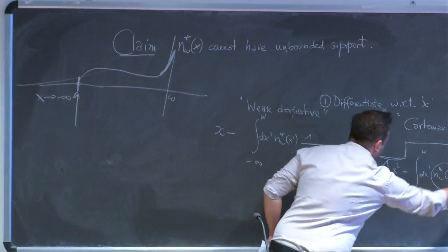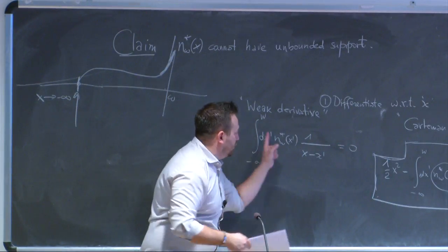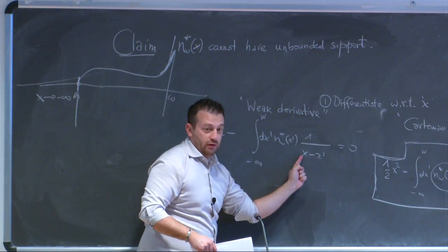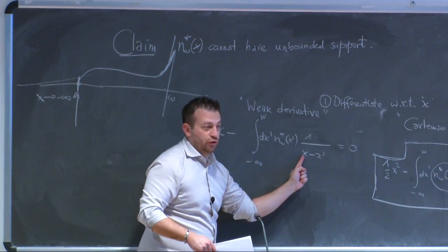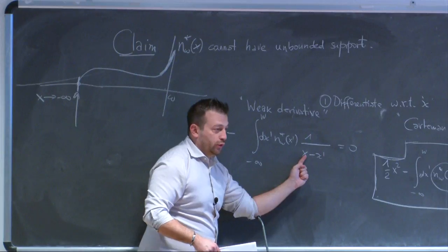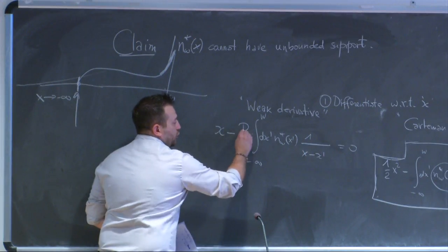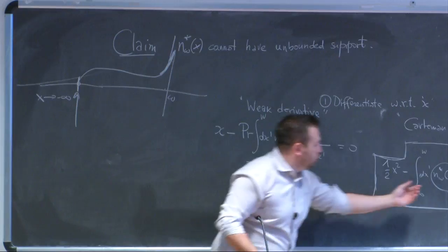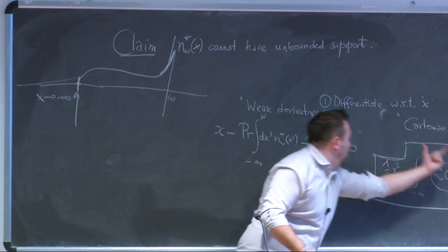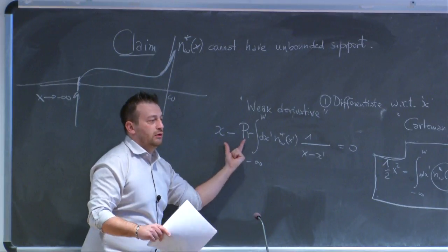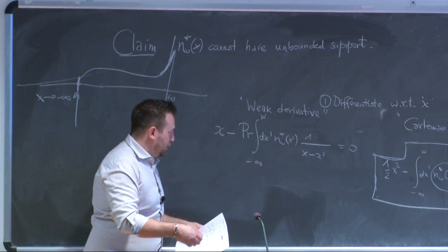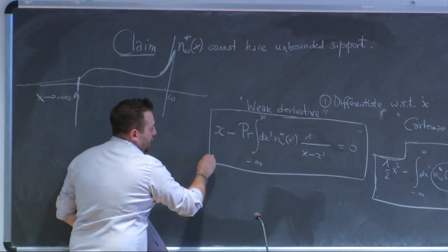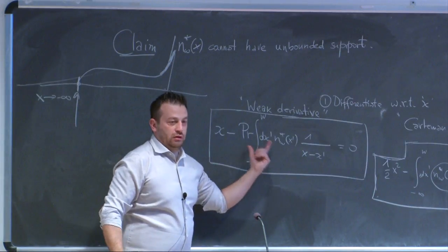The constant gives derivative zero, but there is a problem: when x' equals x you might have a non-integrable, logarithmically divergent point. To cure this, you take the Cauchy principal part. There is a formal mathematical way to go from the derivative of this logarithm to the Cauchy principal part, which is in the notes. This is finally the equation you need to solve.